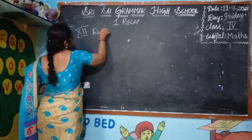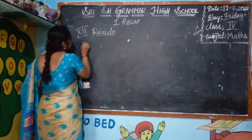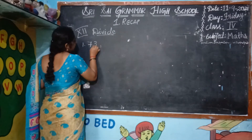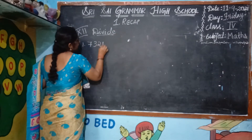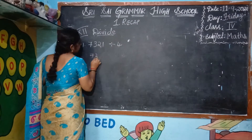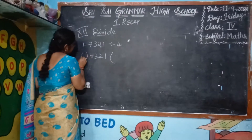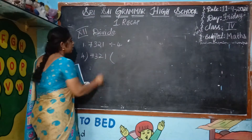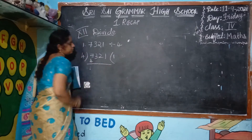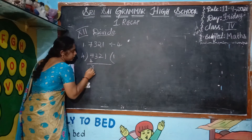Divide. You know the division? The first sum is 7321 divided by 4. Means 7321 should be divided by 4. 4 ones are 4. What is left? 7 minus 4 — 3 is left.